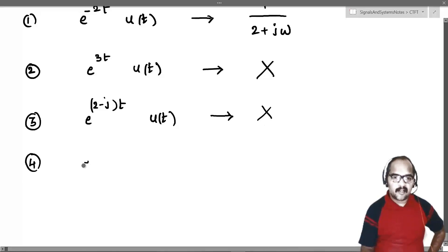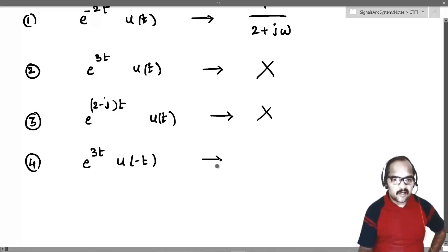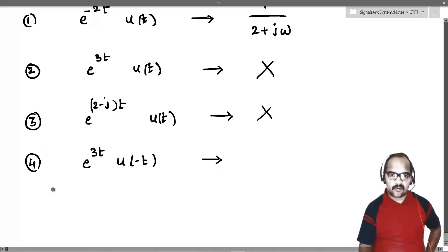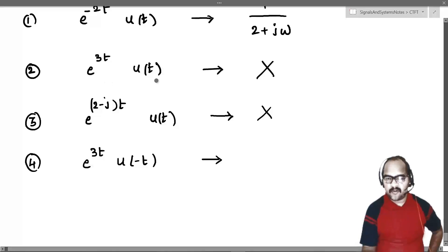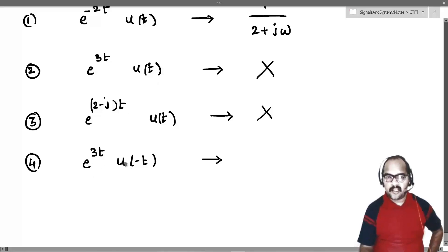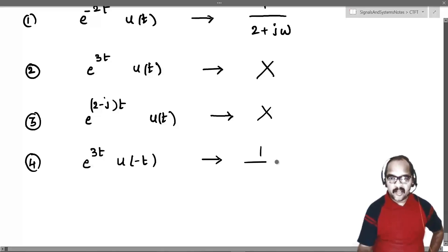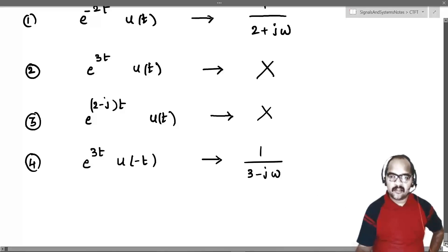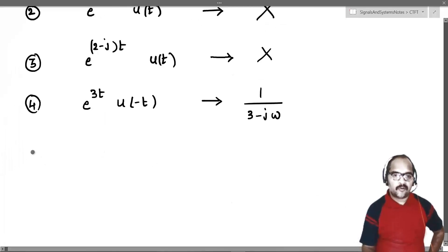Fourth one: e power 3t u of minus t. Please pay attention — compare the second and fourth examples. The second signal, e power 3t u of t, is not absolutely integrable. But e power 3t u of minus t is absolutely integrable and will have 1 by 3 minus j omega as the Fourier transform.